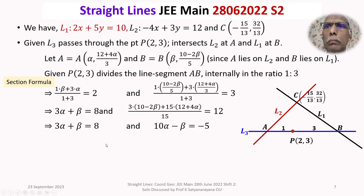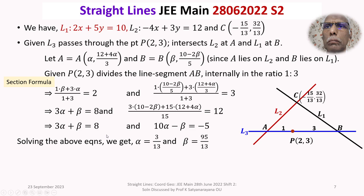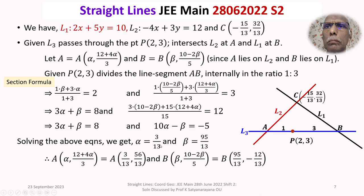We now have two equations and two unknowns: 3 alpha plus beta equals 8, and 10 alpha minus beta equals minus 5. Solving these, we get alpha equals 3 by 13 and beta equals 95 by 13. Substituting alpha into the expression for A's coordinates gives A as (3/13, 56/13). Substituting beta into B's expression gives B as (95/13, minus 12/13).